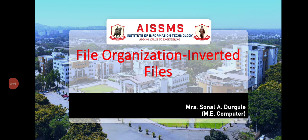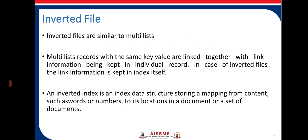In this video lecture we are learning file organization, its type as inverted files. Inverted files are similar to the multilist representation. In multilist, records with the same key values are linked together with the link information being kept in individual records. In the case of inverted files, the link information is kept in the index itself.